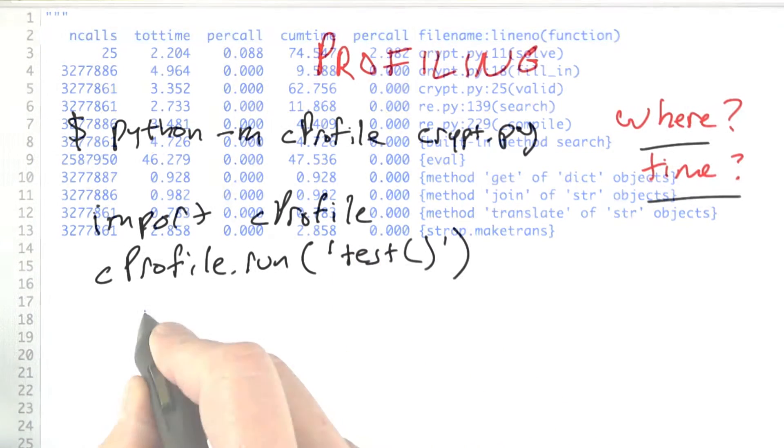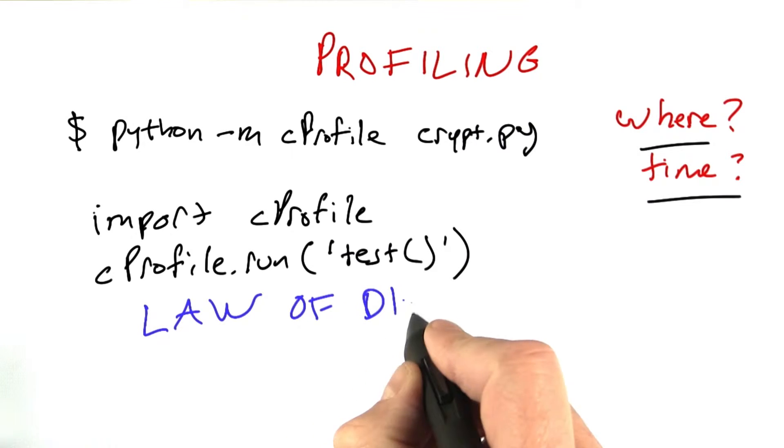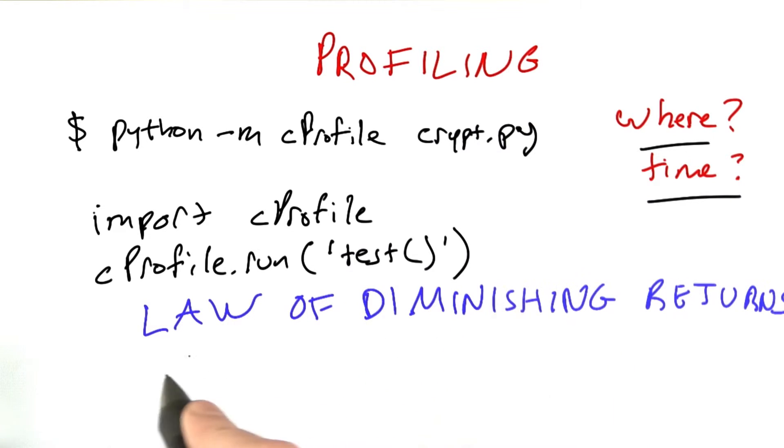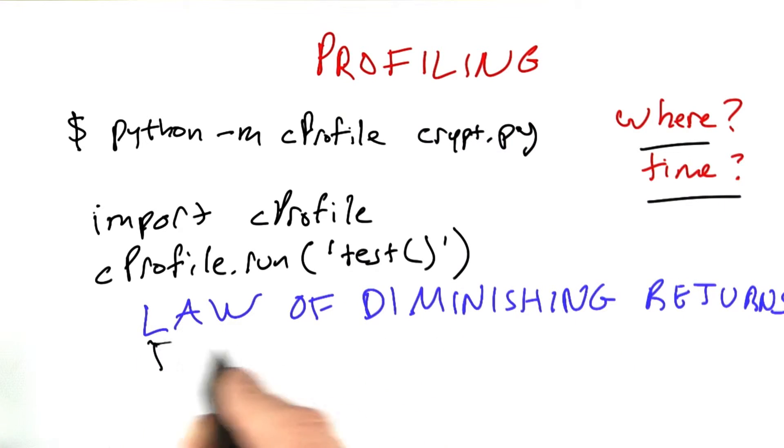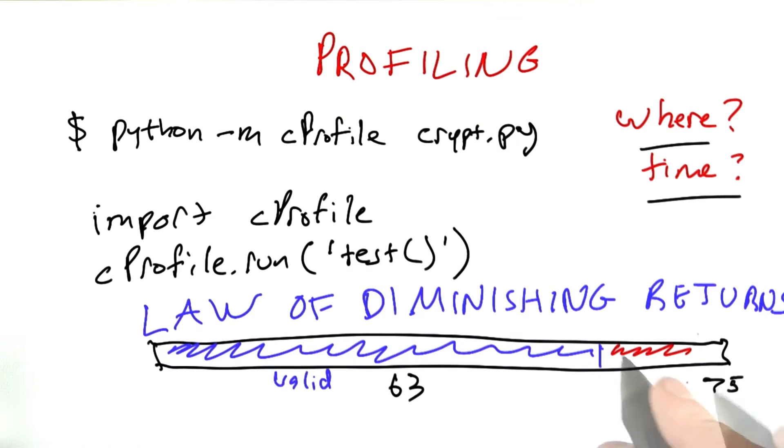it's the law. It's called the law of diminishing returns. The way the law works, if we imagine our total execution time as being this bar here, and if we said that goes up to 75 seconds, 63 of those seconds was taken up by the call to valid, and 10 seconds was taken up by fill in, and then all the rest by everything else,